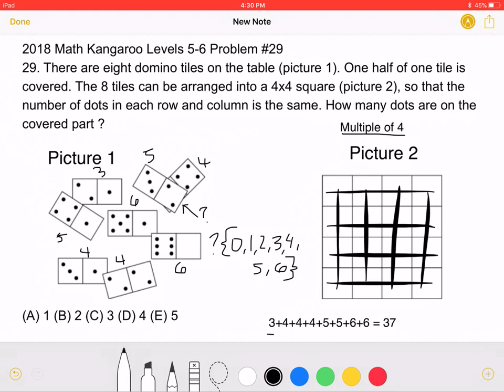If we find the total sum of the numbers that we can see, we will get a total of 37. We know that 37 plus this question mark must be equal to a multiple of 4.